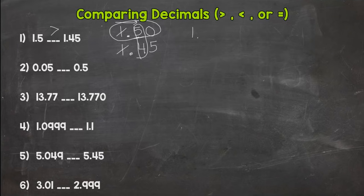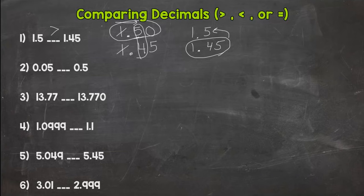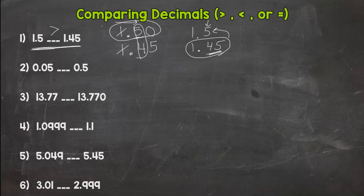One and five tenths is greater than one and forty-five hundredths. Here's a common mistake: do not say one and forty-five hundredths is greater than one and five tenths just because it has more numbers. That doesn't matter with decimals. You need to go left to right, place by place. The tenths place holds more weight than anything to the right of it, so you read the comparison sentence left to right: one and five tenths is greater than one and forty-five hundredths.